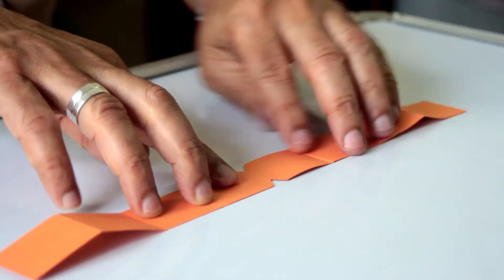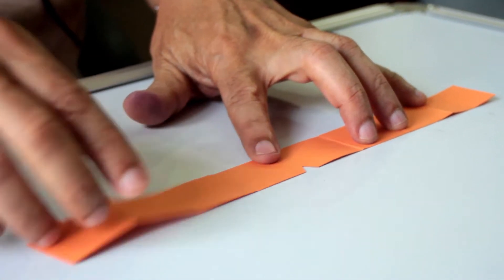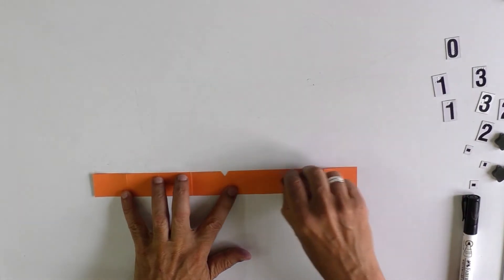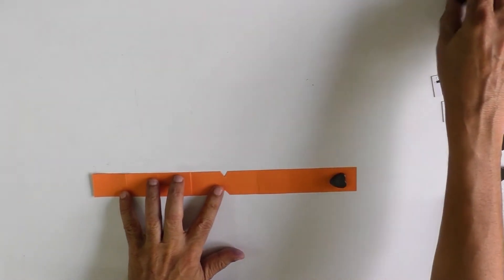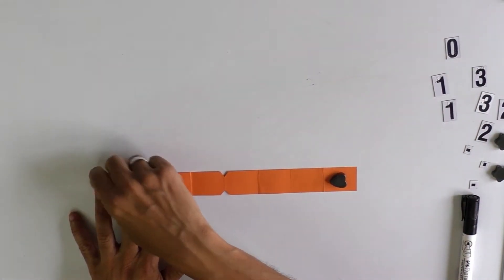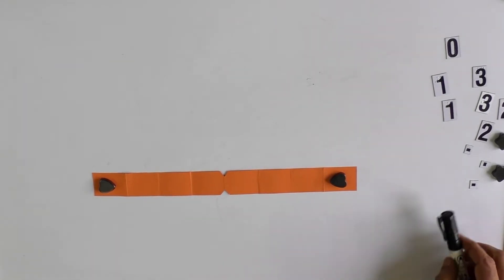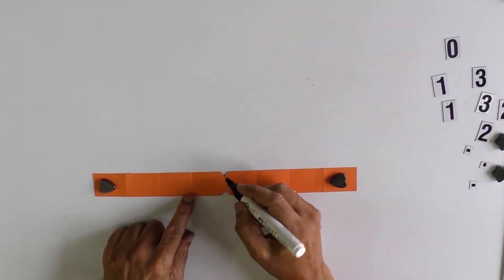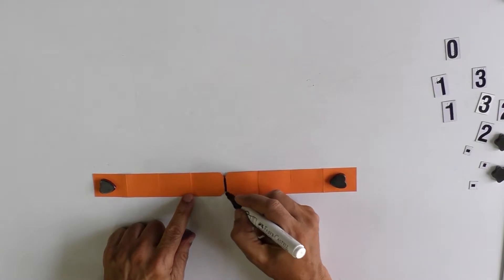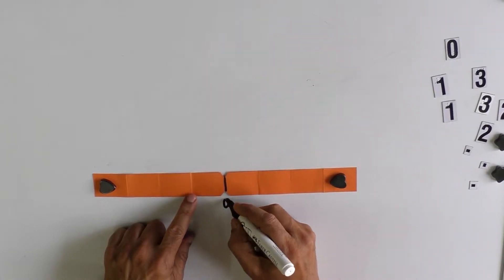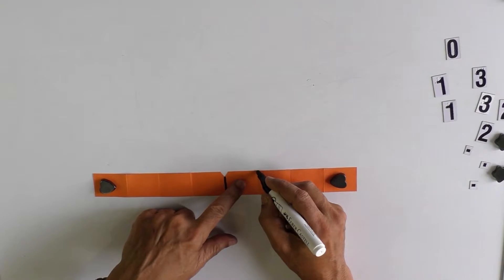Now you have a beautiful number line. Now you place this magnet. So now you have assisted the child to make this number line. For our understanding, you can mark the middle portion as zero.